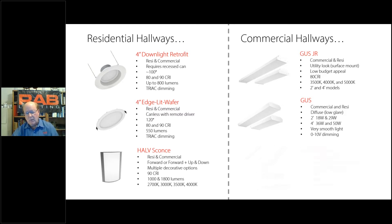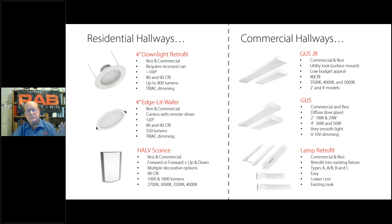Over on the commercial hallway side, we have the Gus Jr., which replaces the fluorescent and still looks like those fluorescent tube lines — easily used for many commercial hallways or back-of-house. The Gus is more diffused, very comfortable, for when you want a little more decor and a bit more upscale. And there's also the option of just lamps to maintain the same look while lowering cost.